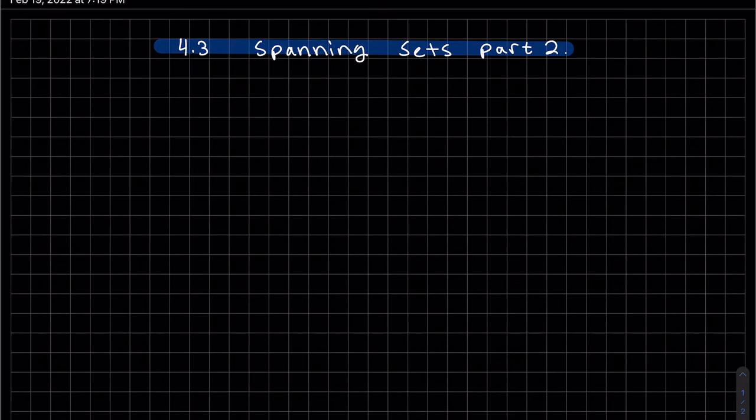Okay, this is part two of 4.3 spanning sets. We're going to start off with an example. So do these two polynomials span P2? What we need to do is find out if we can write any polynomial in P2 as a linear combination of these two.